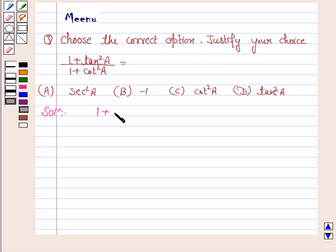The given expression is 1 plus tan square A upon 1 plus cot square A. Now we know that 1 plus tan square A is secant square A and 1 plus cot square A is cosecant square A.